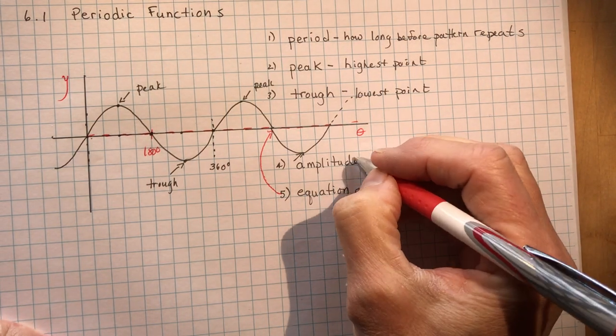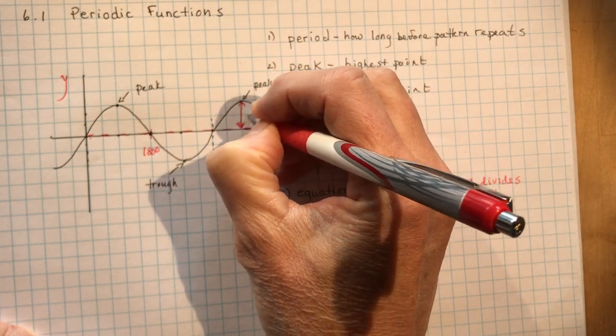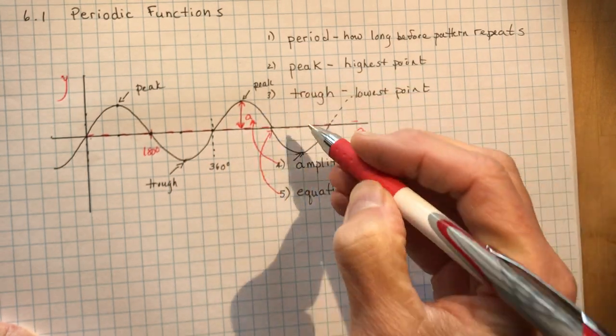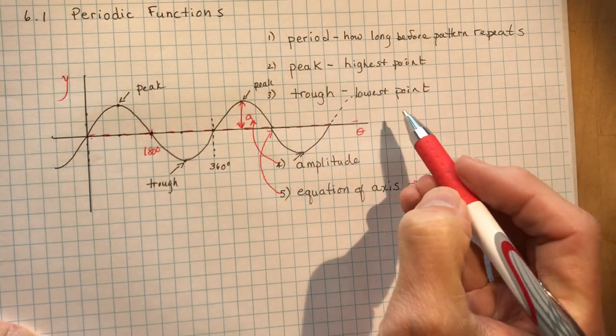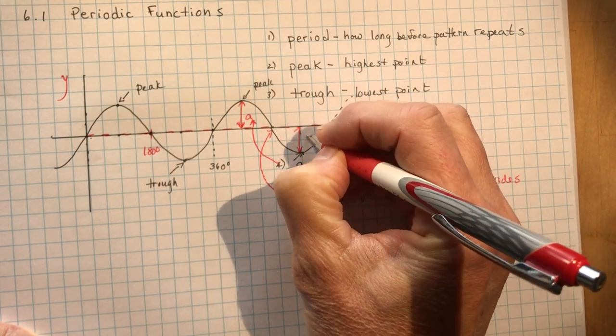So the amplitude, going back to that, that's this distance from here to here. That's your amplitude. Let's put a little arrow up to there. So the amplitude is a distance from the axis to a peak, or the axis to a trough.